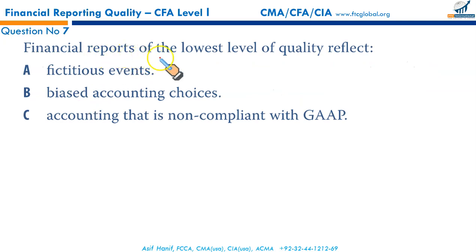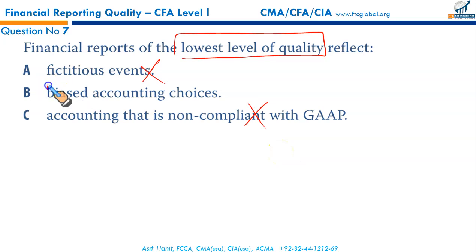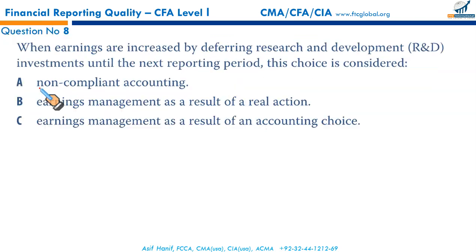Financial reports of the lowest level quality reflect what? Fictitious accounting that is non-compliant is outside the spectrum entirely. Biased accounting choices — specifically, biased accounting choices that favor the management's view of what they want to show to shareholders or users of financial statements — represent the lowest financial reporting quality. B is the right answer.